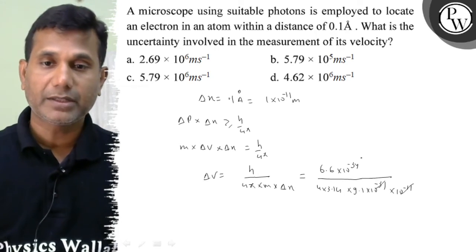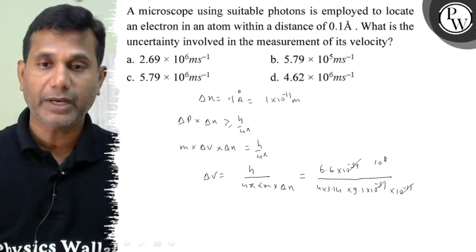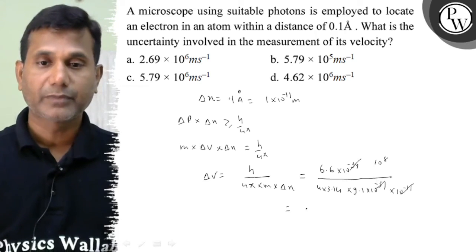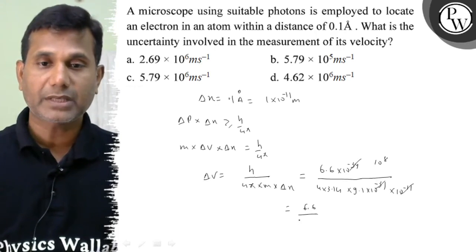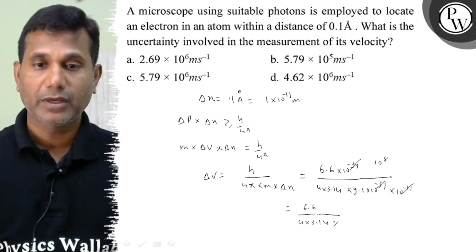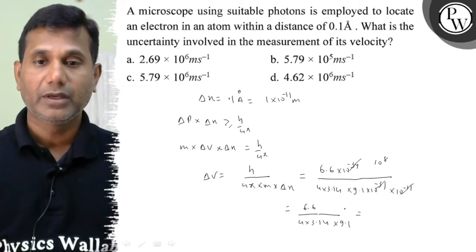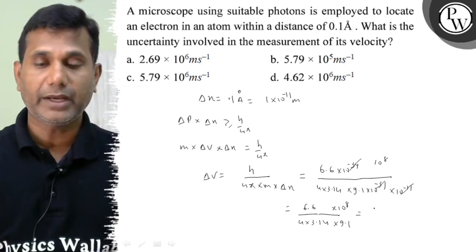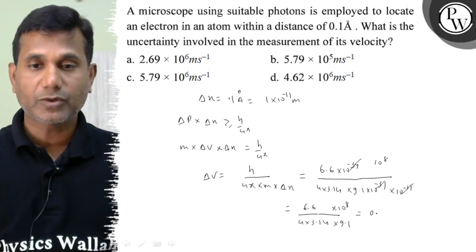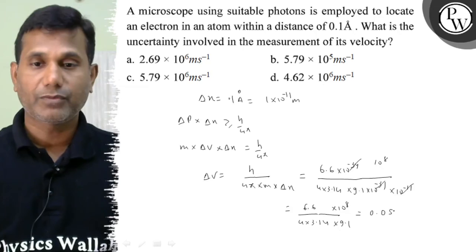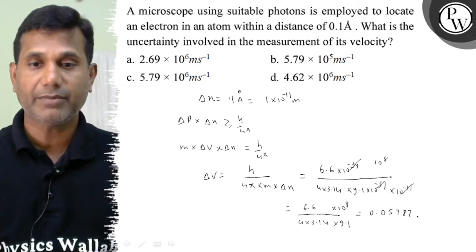When we combine the powers, we get 10 to the power 8. So 6.6 upon 4 into 3.14 into 9.1 and into 10 to the power 8. When we solve this, we get 0.05787 into 10 to the power 8.